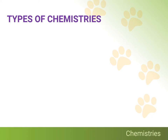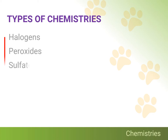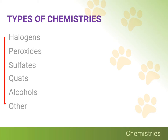For purposes of this discussion, the types of chemistries to be discussed will be halogens, peroxides, sulfates, quats or quaternary ammonium compounds, alcohols, and a few other chemistries.